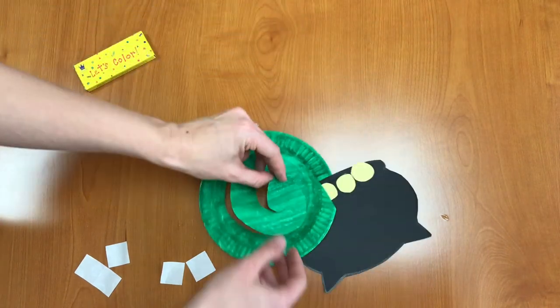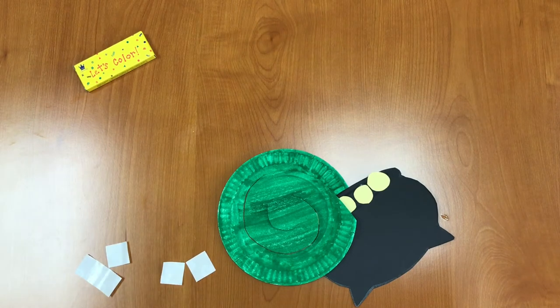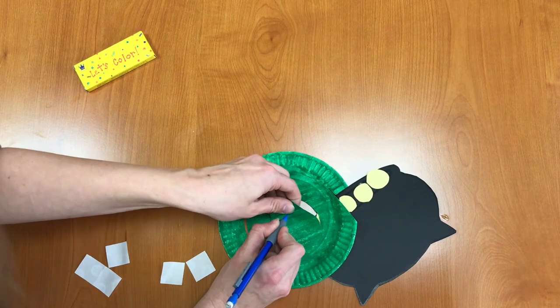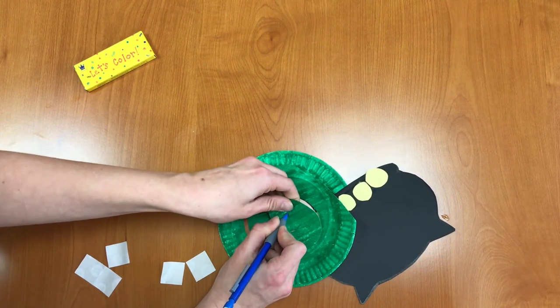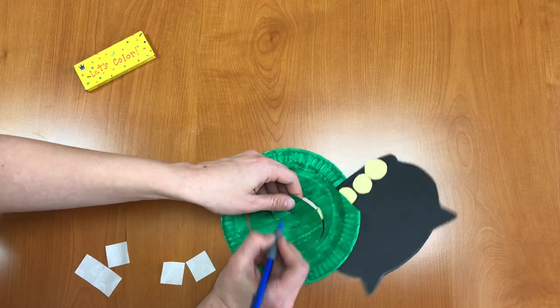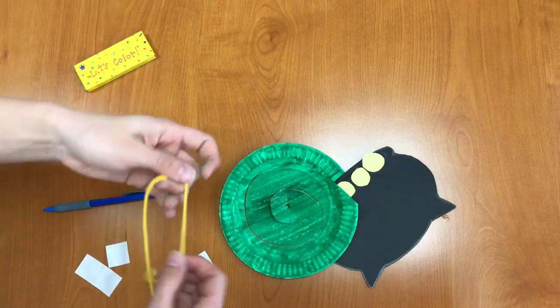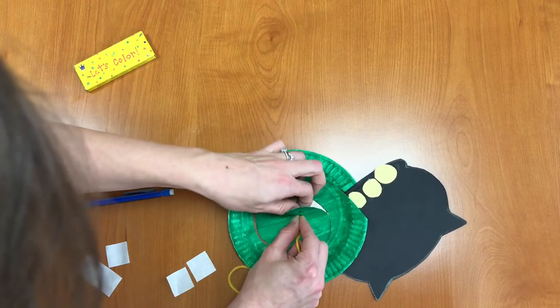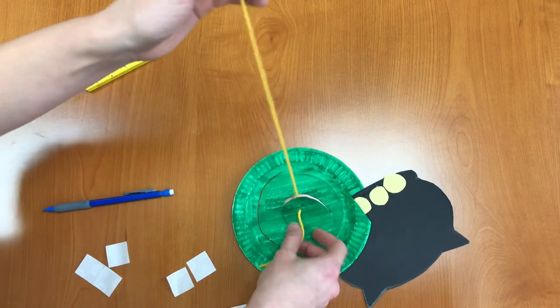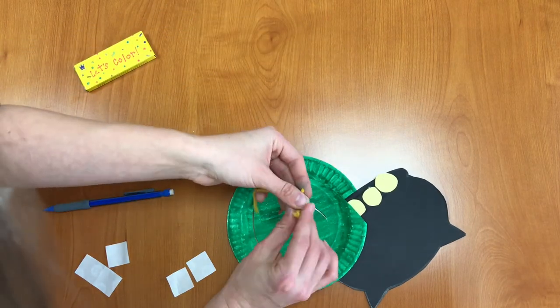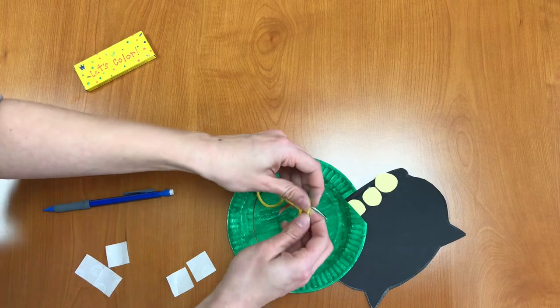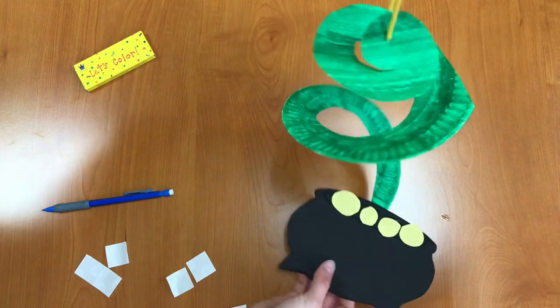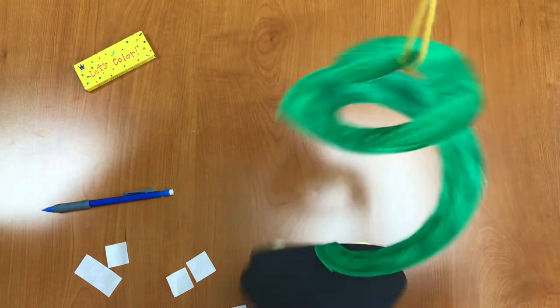Okay and our last step is to take a pencil and carefully poke a hole through the center of your twirler. And we're going to take that yellow string and we're just going to loop it through. And you can just tie it in a double knot to make a loop. That way you can hang up your twirler outside and watch it spin in the wind.